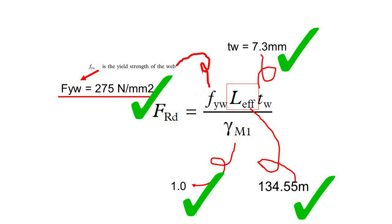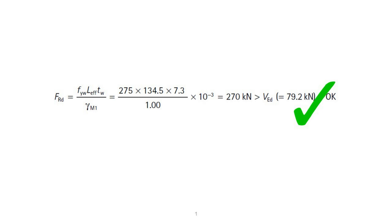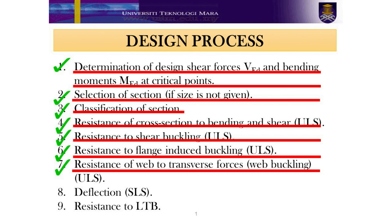Now all the parameters have been determined: yield strength of the web is 275 N/mm², thickness of the web is 7.3 mm, partial factor is 1, and L_Y_F is 134.5 mm. Finally, we can confirm that the proposed beam web is able to resist the transverse forces. Therefore in this lecture, step 5, step 6, and step 7 have been completed.